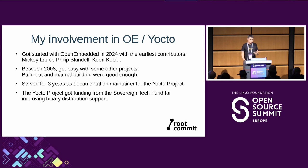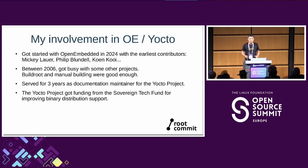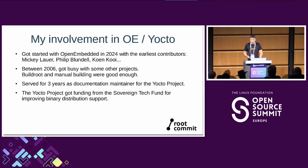The Yocto project got funding from the Sovereign Tech Fund — part of the German state — which funds open source projects that need support or a push that we wouldn't get from anyone otherwise. There was a project to improve binary distro support, and that's what I'm going to talk about.